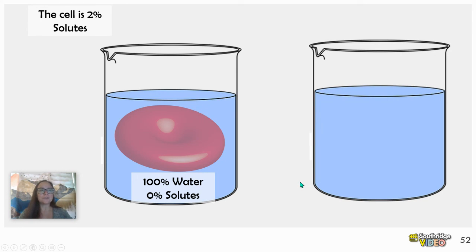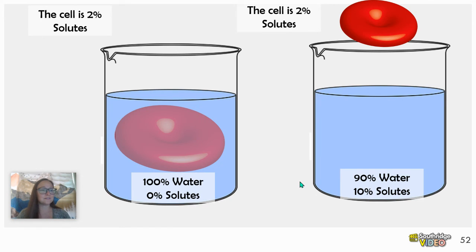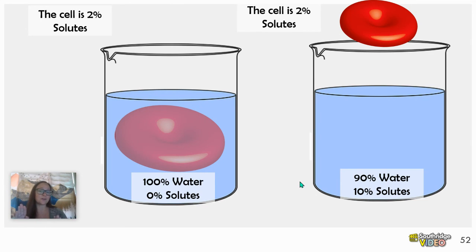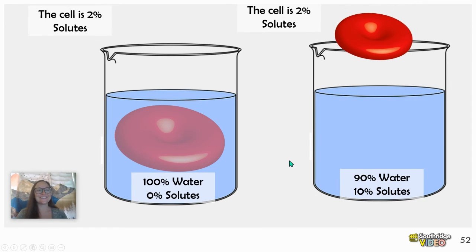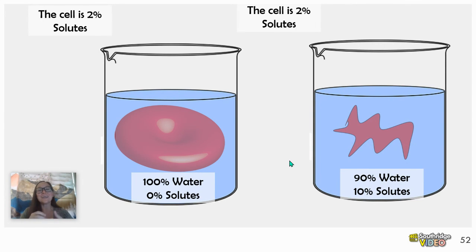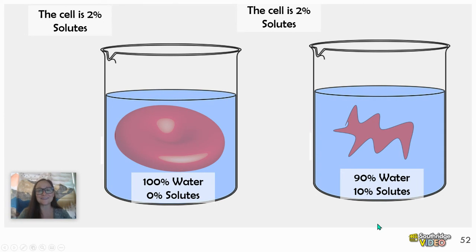Here we have another beaker of water — 90% water and 10% solutes. We take that red blood cell with 2% solutes, so 98% water inside. Inside the blood cell is 98% water and there's 90% water on the outside. The solution on the outside is 90% water and 10% solutes — that is a hypertonic solution. As the red blood cell enters the solution, it's going to lose mass. The water goes from 98% on the inside to 90% on the outside, and the cell will shrivel. That's it for osmosis practice — great job!